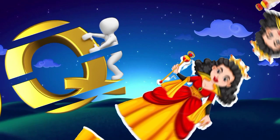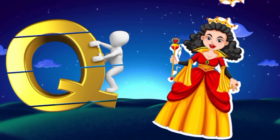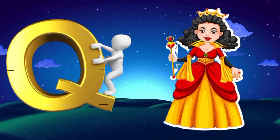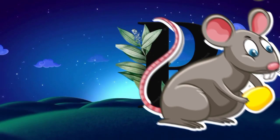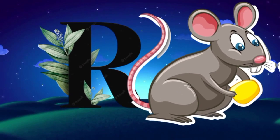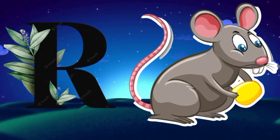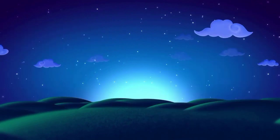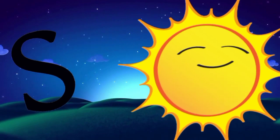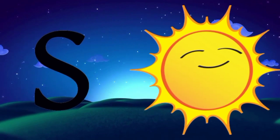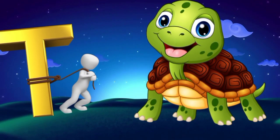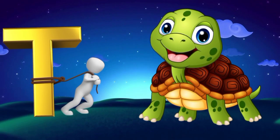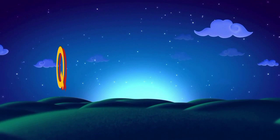Q is for queen, k-k-queen. R is for rabbit, r-r-rabbit. S is for sun, s-s-sun. T is for toad, t-t-t-toad.